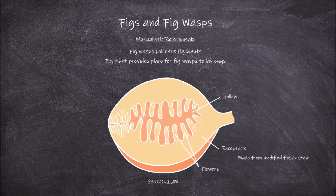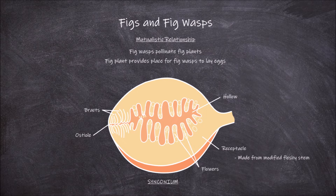At the end of the synconium is an opening called the osteol. The osteol is lined with bracts. In some fig species, male and female flowers are found in fig fruits from separate plants. In others, such as in this example we are going to look at, both female and male flowers are found within the same fig.